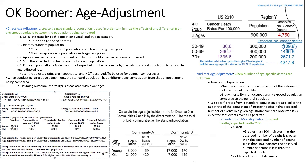Indirect age adjustment is used when you don't know the number of age-specific deaths. You can still calculate the standardized mortality ratio (SMR), which is the number of deaths expected over the number observed. This tells you if you're seeing more or fewer deaths than usual in an age bracket.